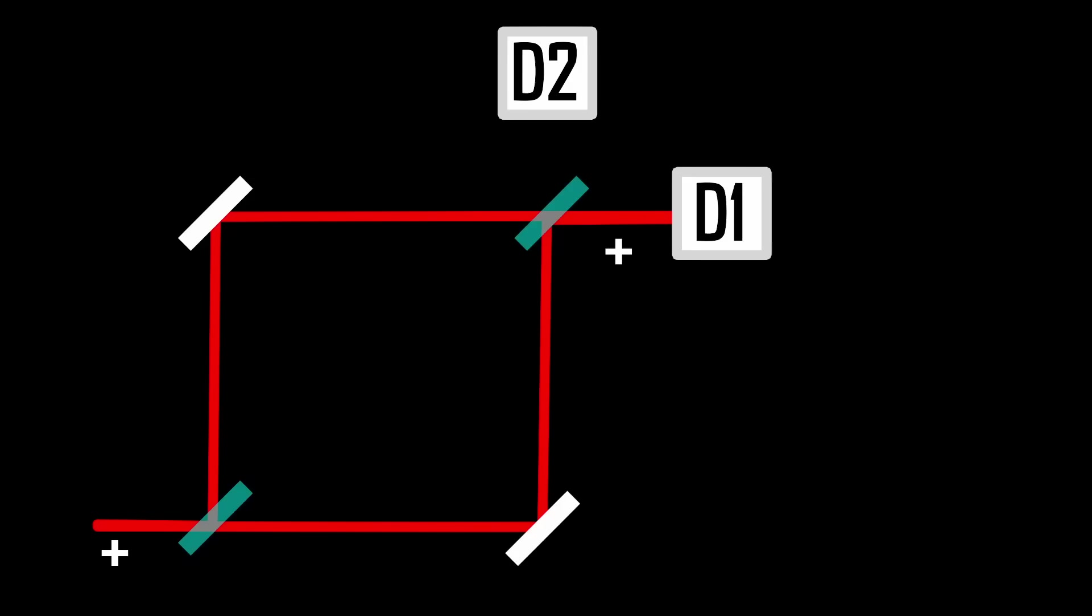If we just send it through the beam splitter, it'll come out the same way. Nothing interesting going on. Then we put a polarization flipper on the lower path, which makes the polarization there change from plus to minus.